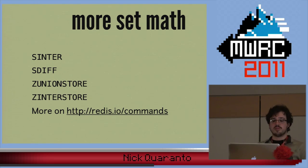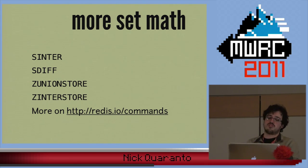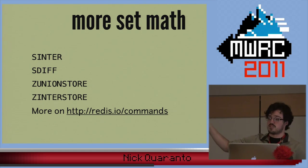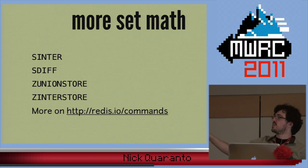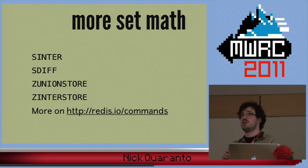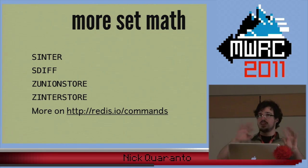There are a lot more set methods available — there's intersect and difference on the normal sets, and also the store version of both of those. The Z sets have zunionstore and zinterstore. There's no zunion or zinter — there's just the store equivalent. You can find a lot more of those Redis commands along with a really neat interactive tutorial on redis.io/commands. You can go in there on each different command, it gives you a little tutorial and examples, and you can type around and mess with a live Redis instance connecting right there.